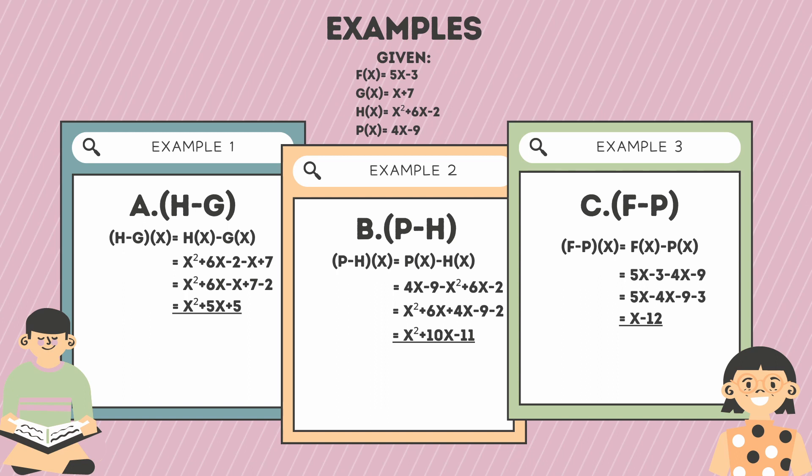And finally, number 3: (f − p)(x) = f(x) − p(x) = 5x − 3 − (4x − 9) = 5x − 4x − 9 − 3 = x − 12.